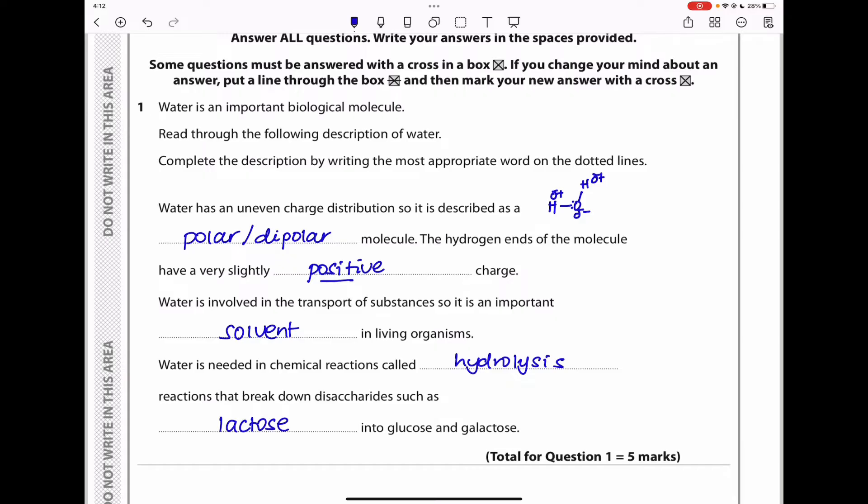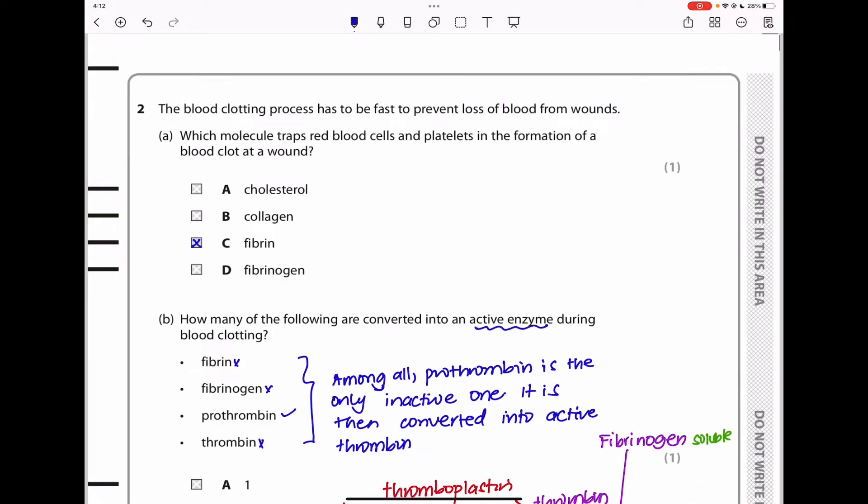Let us move on to question two. We know this is supposed to be fibrin because it is the insoluble product from when fibrinogen is converted into fibrin. Remember, fibrinogen is soluble while fibrin is insoluble. The mesh-like structure is fibrin and it traps blood cells, red blood cells, as well as platelets around the wound, forming a clot.